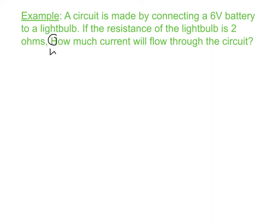All right, so let's write down what we're given. We know that the voltage is 6 volts. We know that the resistance of the light bulb, R, is 2 ohms. And we're being asked to find the current. So we can use I equals V over R. 6 volts divided by 2 ohms equals 3 amps.